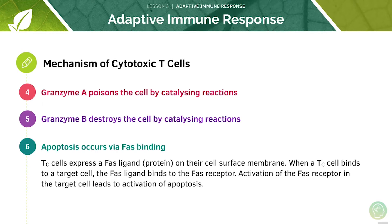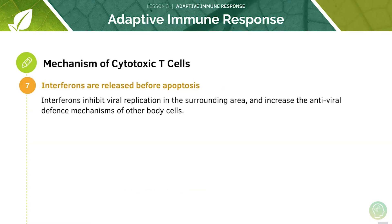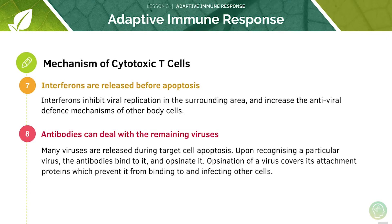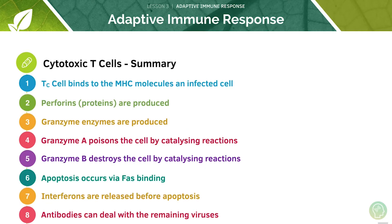When a cytotoxic T cell binds to a target cell, the FAS ligand binds to the FAS receptor, which is found on the cell surface membrane of most cells, leading to the activation of apoptosis. Before apoptosis, the cell produces and secretes interferon proteins. Antibodies are also able to deal with virus-infected cells and are constantly present in the bloodstream and inside tissues. Here's a summary of what cytotoxic T cells do.